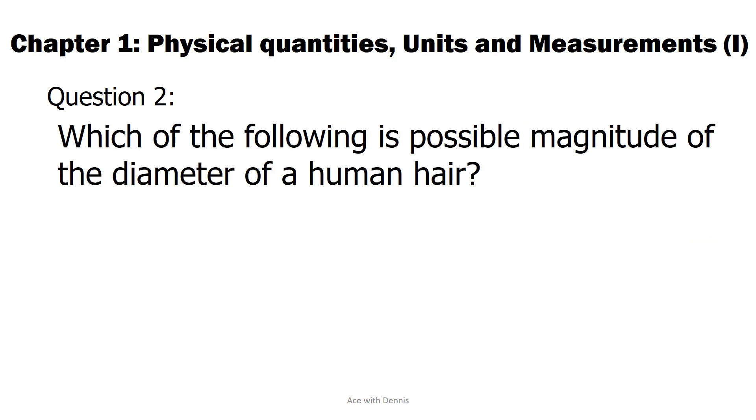Question 2: Which of the following is possible magnitude of the diameter of a human hair? A. 10 nanometers. B. 10 micrometers. C. 0.1 millimeters. D. 1.0 centimeters.